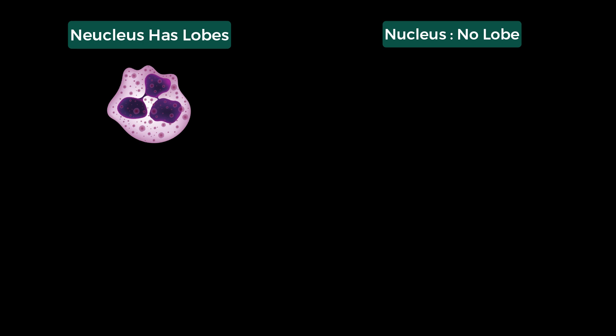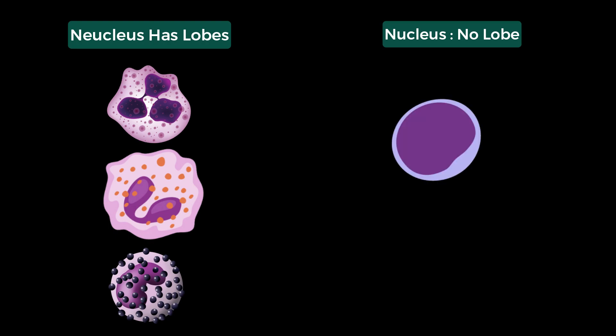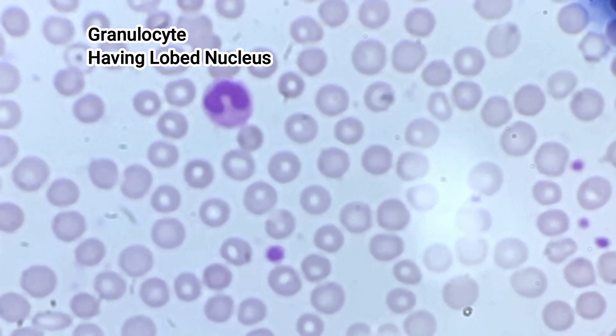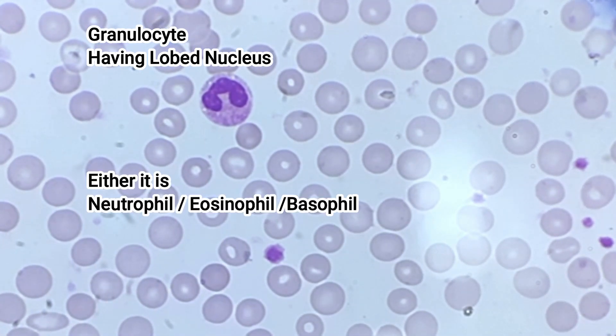Notice if the nucleus has lobes or not. If it has lobes, it may be a neutrophil, eosinophil, or basophil. If the nucleus has no lobes, start thinking it might be a lymphocyte or monocyte. Now, coming to the granulocytes which have lobed nuclei, we will limit our thinking to neutrophil, eosinophil, or basophil only.